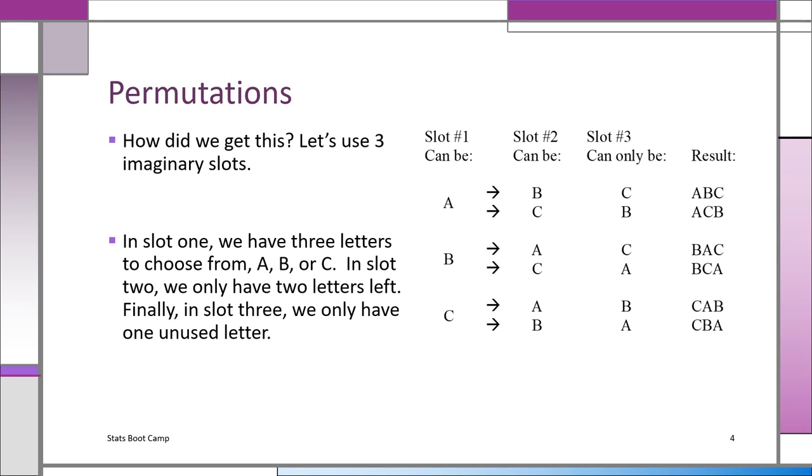So let's look at this. We have three letters, A, B, or C. So in the first slot, we have a choice. We put an A, a B, or a C. Suppose in slot one, we used an A. Now in slot two, we have a choice of B or C. Suppose we use the B for slot two. All that's left is C. So there's your first arrangement, A, B, C.